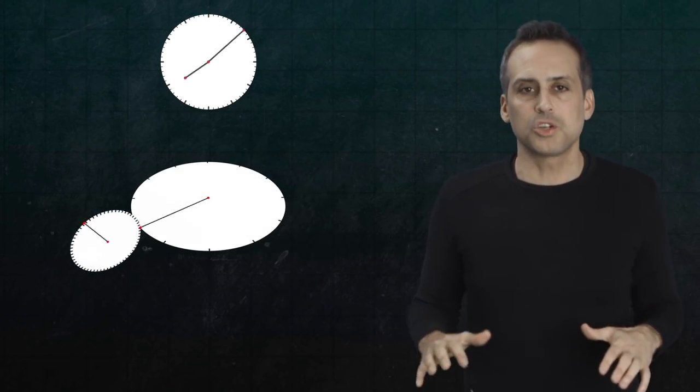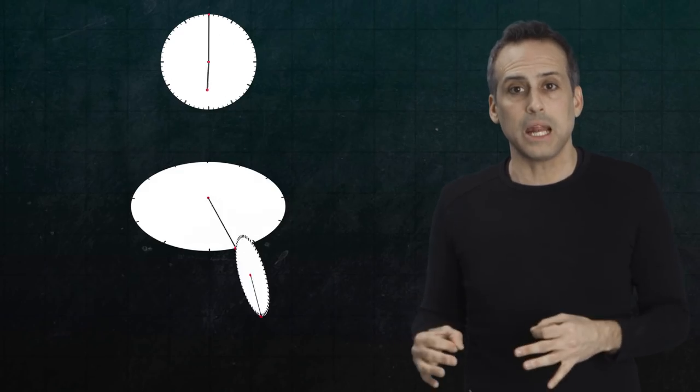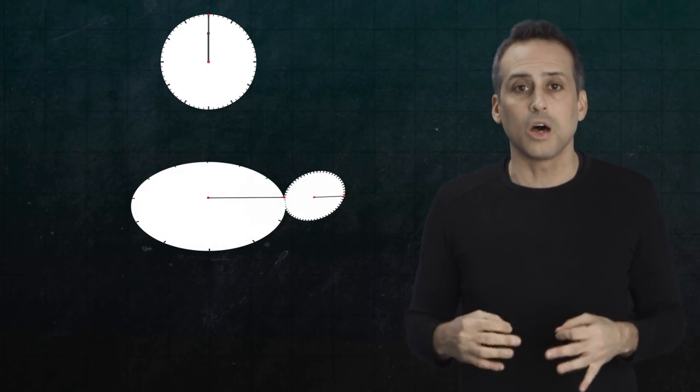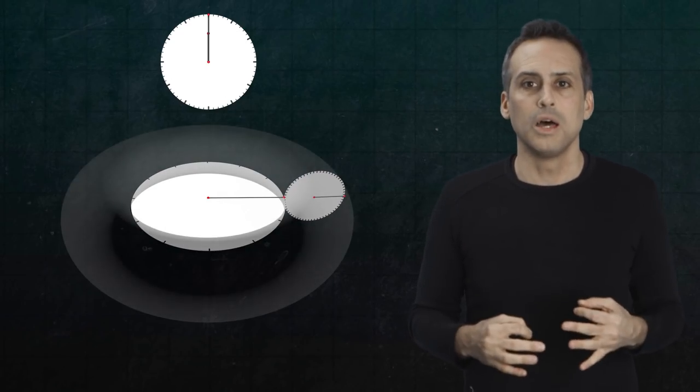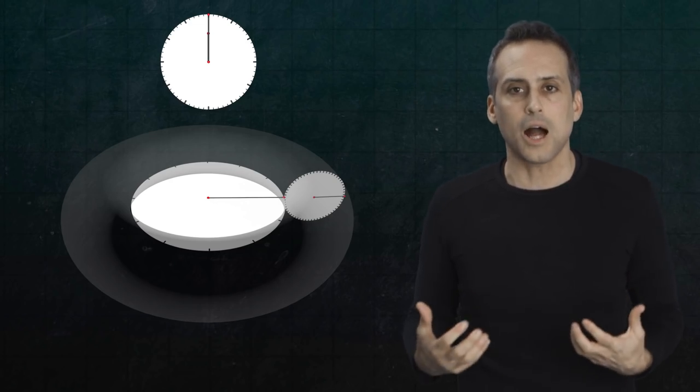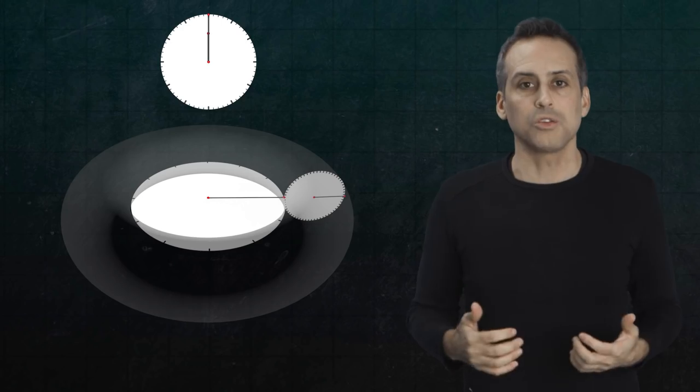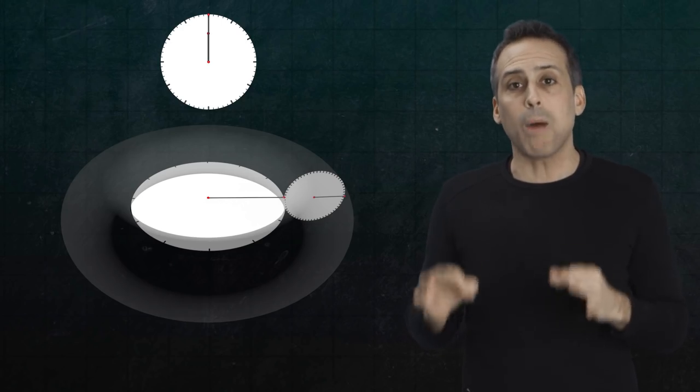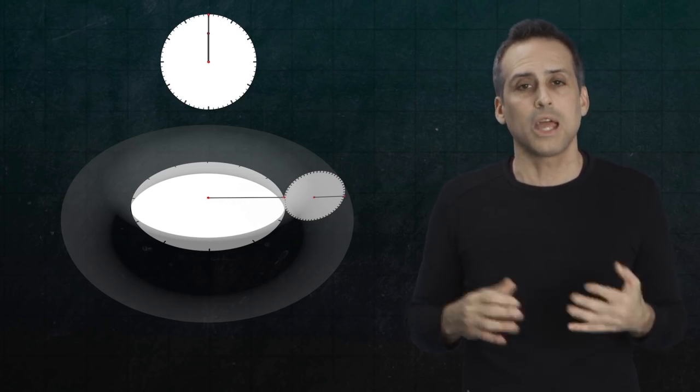If you play around with this contraption, you'll notice that no matter how you position the two hands, the tip of the minute hand always falls on the surface of this torus. That's why a torus is a natural backdrop for analyzing two-hand clocks, because each point on the torus corresponds to exactly one possible configuration of the two hands and vice versa.